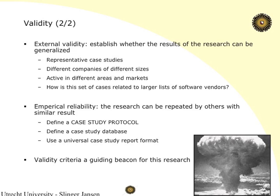Different companies of different sizes — or maybe we should look at maybe 10 to 15 companies of a similar size. Active in different areas of markets. And of course, how is this set of cases related to larger lists of software vendors? In the Netherlands there are about 1,500 software companies, rough estimate. It would be very nice if we could say these 15 that we studied represent 1% of the total data set, but this 1% can be extrapolated to cover the whole data set.